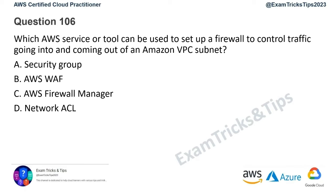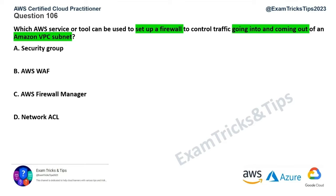Question 106: which AWS service or tool can be used to set up a firewall to control traffic going into and coming out of an Amazon VPC subnet? Option B is obviously wrong — it is itself a firewall, not a tool or management console to set up a firewall. So that's wrong — AWS WAF.